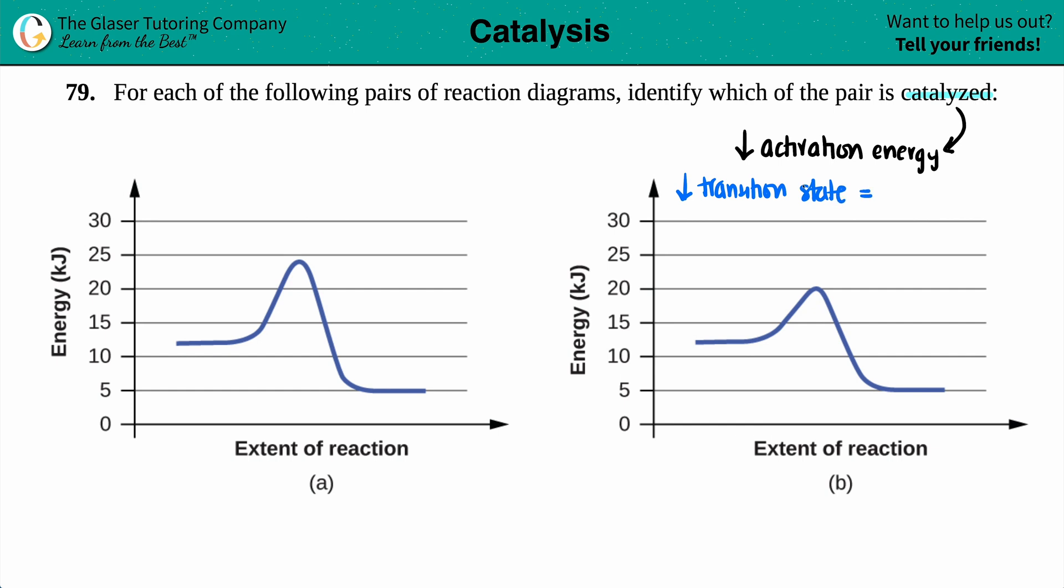The lower the transition state, right, the transition state by definition is the tippy point of your graph. So it's the highest point of the graph. Catalysts will always lower that tippy point. So just spot that out.